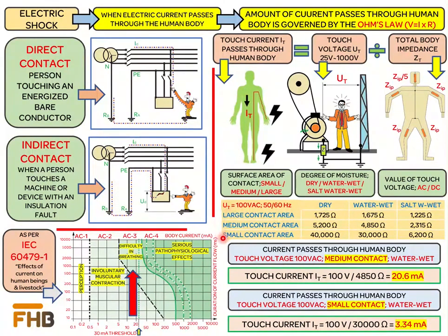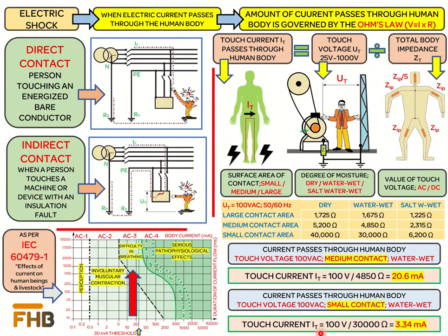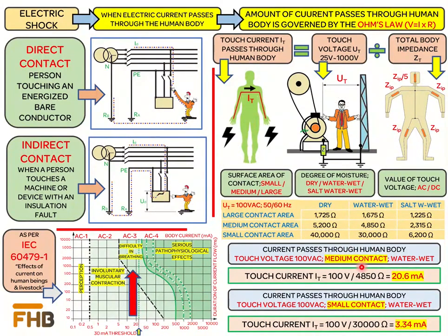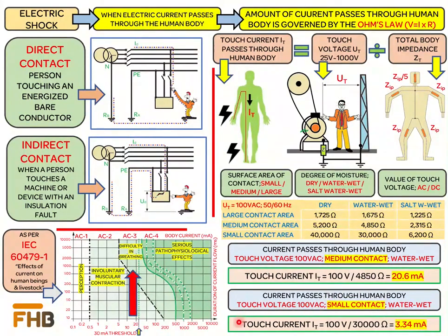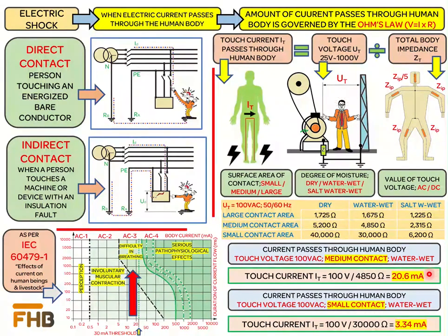Since the main aim of our discussion is to find the danger that electric current can cause to a human body, we will now calculate the value of electric current passing through a human body under different conditions. For this comparison, the surface area is variable while the touch voltage is constant at 100 V AC and degree of moisture is constant at wet condition. From the calculation, for a medium surface area the touch current is found to be 20.6 milliamperes, and for a small surface area it is 3.34 milliamperes. This shows that a medium contact with a live surface results in more current flowing through the body compared to a small surface area contact.